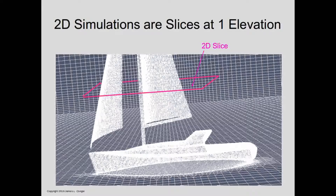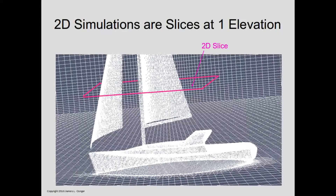In a number of the early slides, we'll be looking at two-dimensional slices through the model — you can imagine that as a slice at about one-third of the way up the sails. We'll be looking down, so you'll see the profile of the jib, the mast, and the mainsail, but you won't see any of the hull in these two-dimensional views of the data.